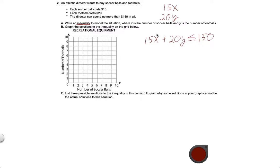And hopefully that makes sense. We pay $15 for each soccer ball, $20 for each football, and after we've spent all of that money we can't spend $151. We can't spend $150 and a penny. That's no good. It has to be less than or equal to $150 even.